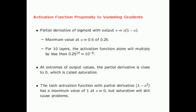The tanh activation function is slightly better than the sigmoid because its partial derivative has a maximum value of 1 rather than 0.25. But you still have the problem of saturation because it requires only a few activations to take on small values in order to kill the gradient as you backpropagate.